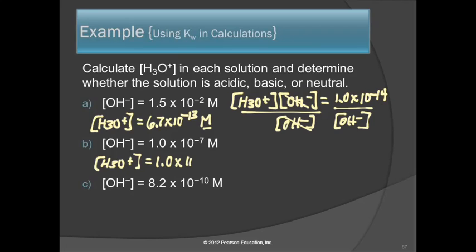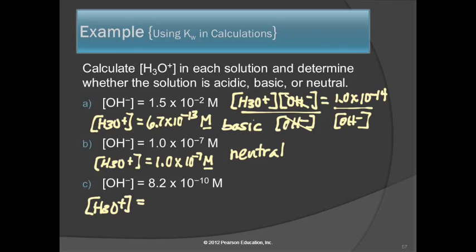Part B would be a neutral solution. For part A, the concentrations of hydronium and hydroxide are equal, so this is neutral. The first one — where the hydroxide ion concentration is larger — is basic. For the bottom one, the hydronium ion concentration comes out to be 1.2 times 10 to the minus 5, which is acidic because H3O+ is larger than the hydroxide ion concentration.